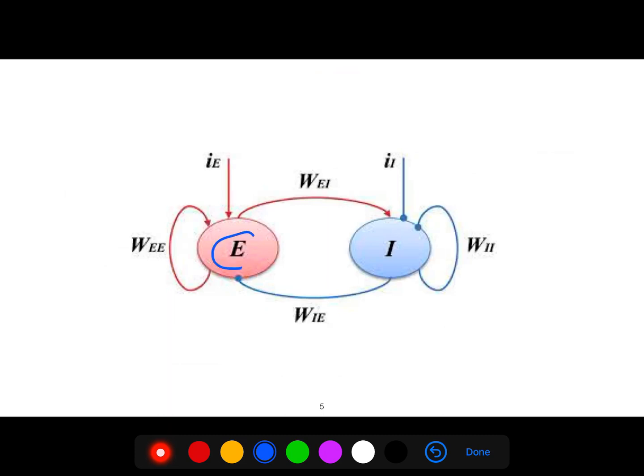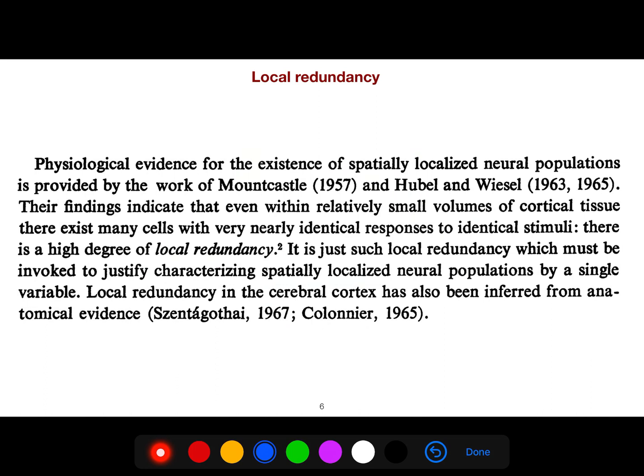We have excitatory neurons with a recurrent loop with itself. So we can consider E as a recurrent neural network and I as a recurrent neural network, but there is a connection between them as well. These are the weights going from excitatory to inhibitory and from inhibitory to excitatory.